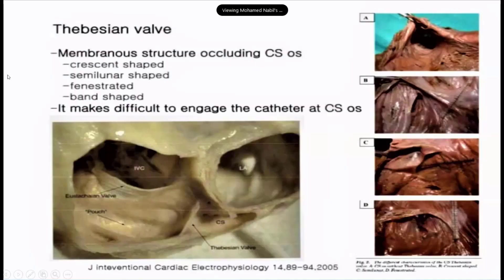The first valve that might obstruct coronary sinus cannulation is the Thebesian valve. It is crescent-shaped, semilunar-shaped, or fenestrated. This valve can obstruct the coronary sinus inflow.